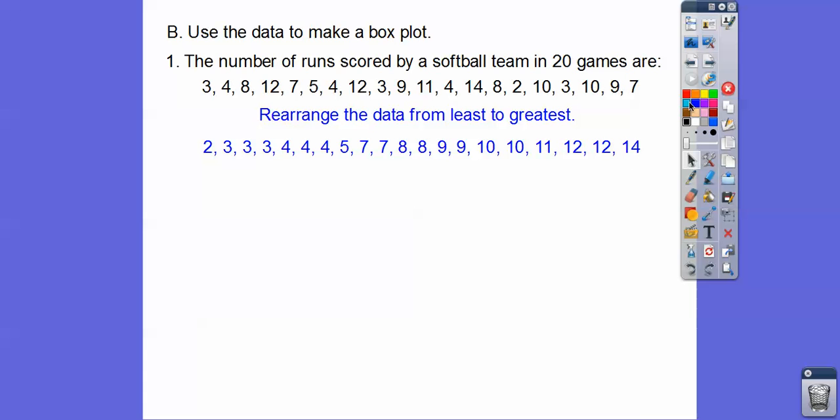There's 20 numbers, so the 10th and 11th number would give us the median. This is the 10th number in, this is the 11th number in. So the median is the average of those two guys. 7.5 is the median.